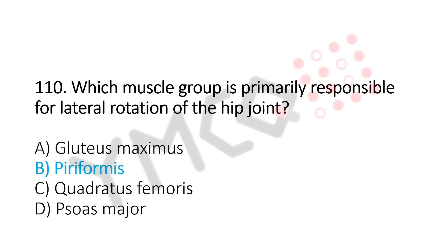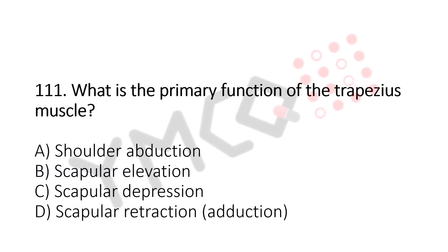Now let's move to question number 111. What is the primary function of the trapezius muscle? Option A, shoulder abduction. Option B, scapular elevation. Option C, scapular depression. Option D, scapular retraction. And the answer is Option B, scapular elevation.